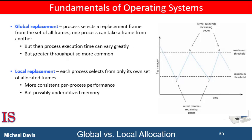One possible strategy to implement a global page replacement policy will satisfy all memory requests from the free frame list. Rather than waiting for the list to drop to zero before we begin selecting pages for replacement, we trigger page replacement when the list falls below a certain threshold. This strategy attempts to ensure that there is always sufficient free memory to satisfy new requests. When the free frame count drops below this threshold, a kernel routine is triggered that begins reclaiming pages from all processes in the system. The pages used by the kernel itself are exempted from this reclamation.